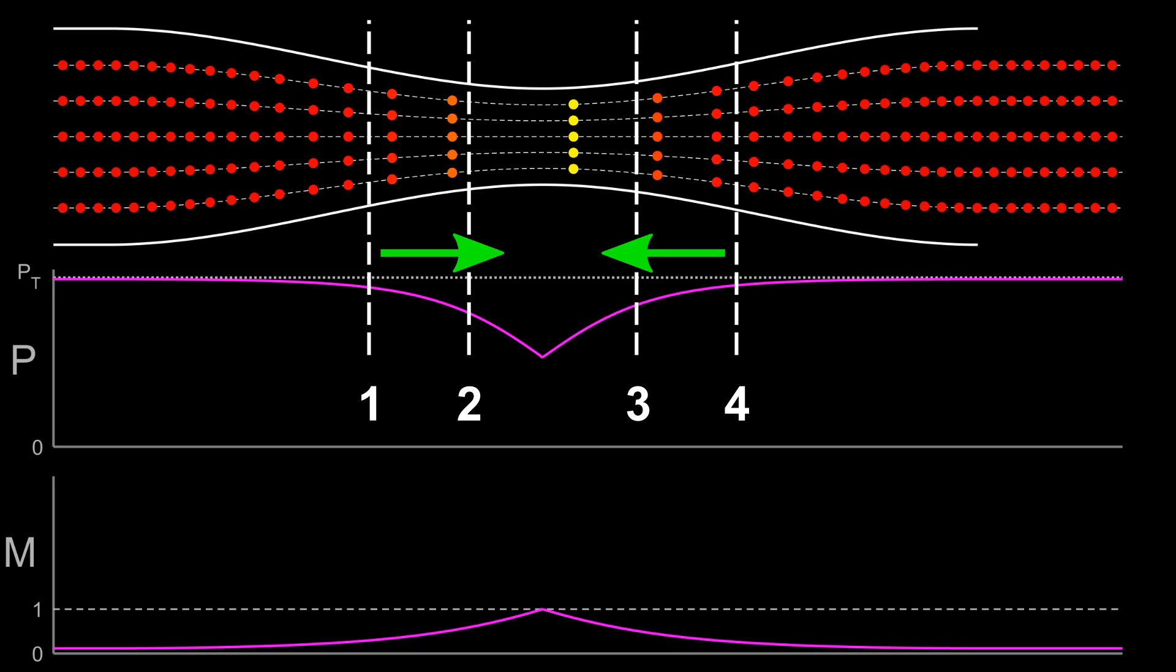You might be thinking, wait, we have sonic flow in the throat and an expanding nozzle. Doesn't that mean the flow should be supersonic? Let's recall point 2. The nozzle exit pressure must match the atmospheric pressure. The short story here is that the exit pressure is too high to achieve supersonic flow. In other words, with a high atmospheric pressure, we don't have a large enough pressure difference to achieve supersonic flow.